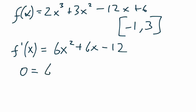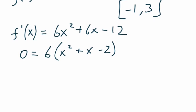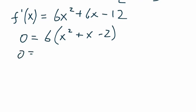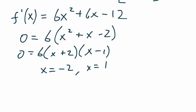This can be factored by factoring out a 6, so 6 times x squared plus x minus 2, and then that quadratic does factor to be 6 times x plus 2 times x minus 1. So we get two values, we get x equals negative 2 and x equals positive 1.